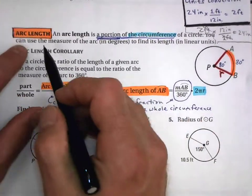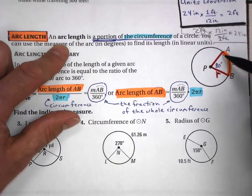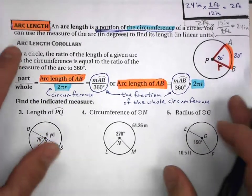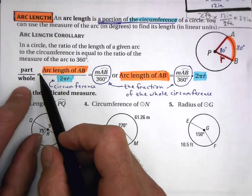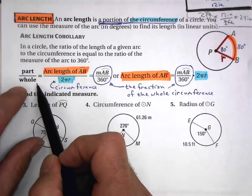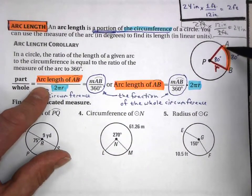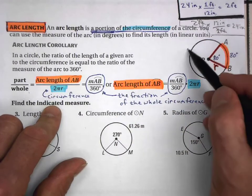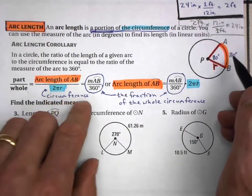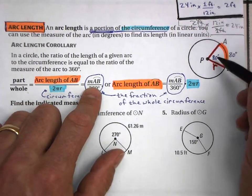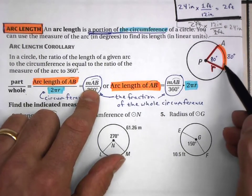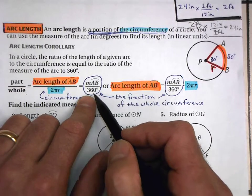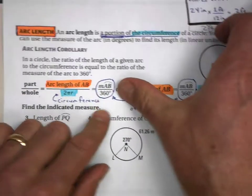Now let's look at arc length. The arc length is a portion of the circumference — a portion of the entire circle. We create a proportion: part over whole. The arc length of arc AB over the whole circumference equals the measure of that arc over the total measure of the circle. Remember, the measure of the intercepted arc equals the measure of the central angle over 360 degrees.